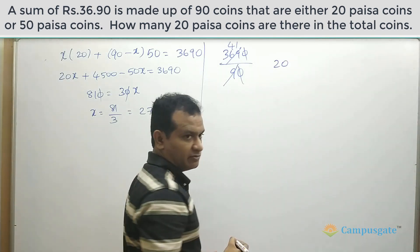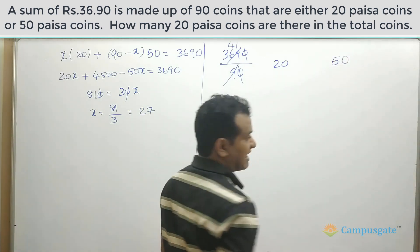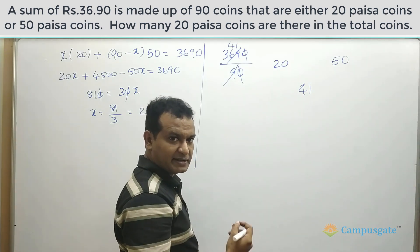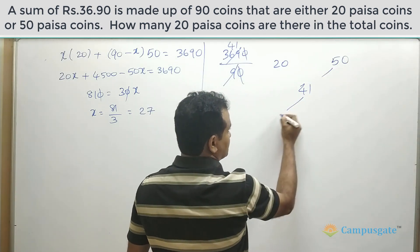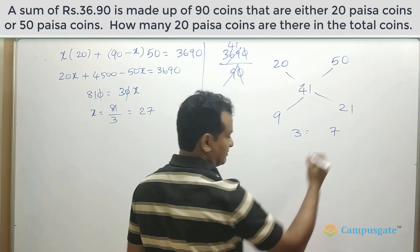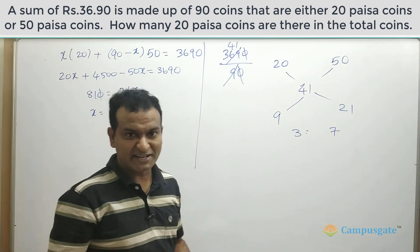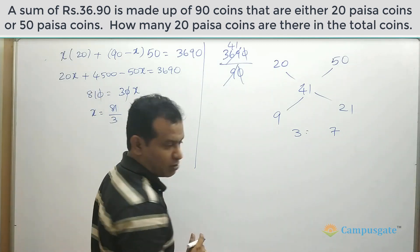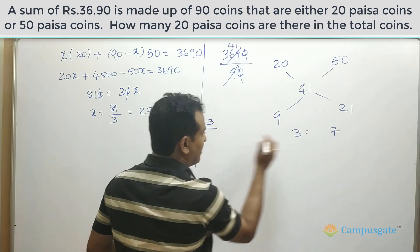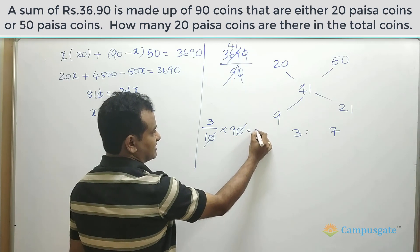We have coins with an average value of 20 paisa and others with an average value of 50 paisa, and the overall average is 41 paisa. Subtracting: 41 minus 20 is 21, and 50 minus 41 is 9. The ratio of 20 paisa to 50 paisa coins is 9 to 21, simplified to 3 to 7. To find the 20 paisa coins: 3 divided by 10, multiplied by 90, gives 27.